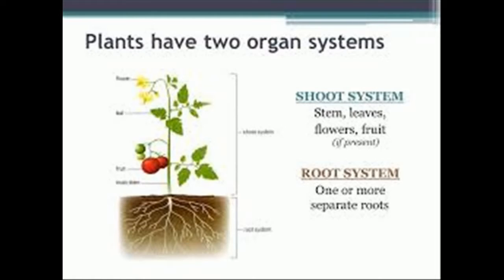A plant has two organ systems: one, the shoot system, and two, the root system.